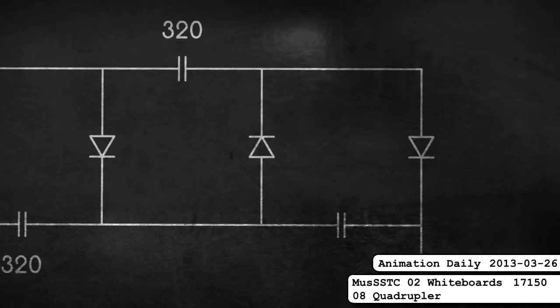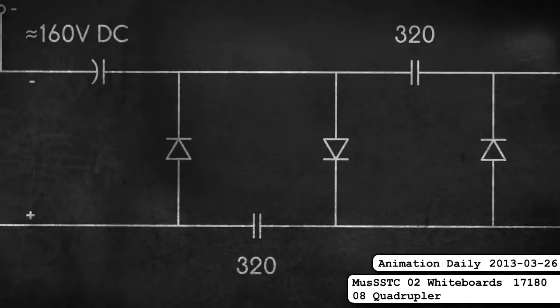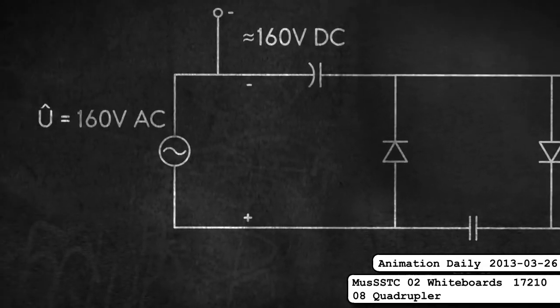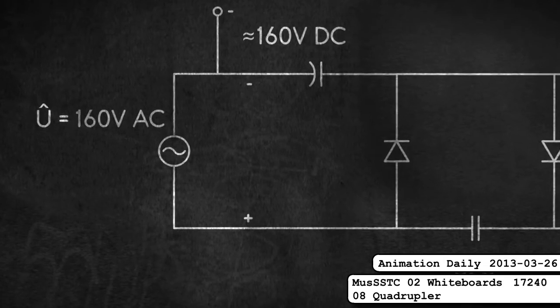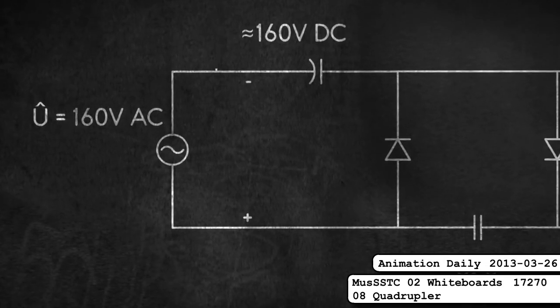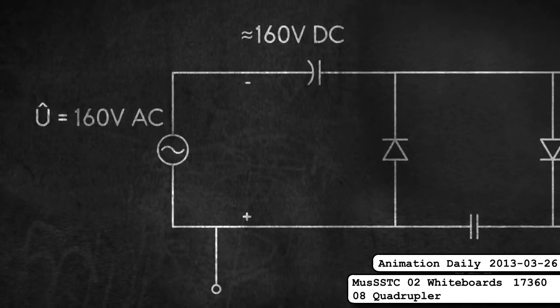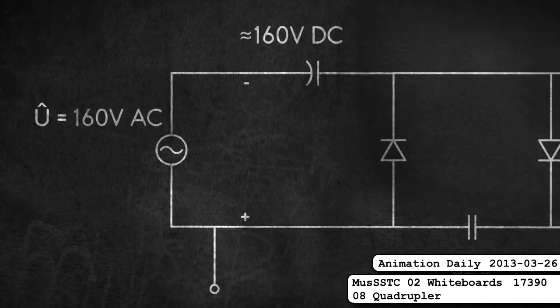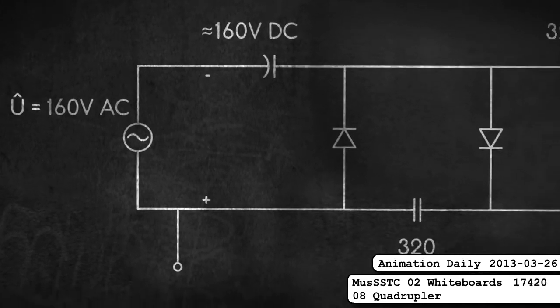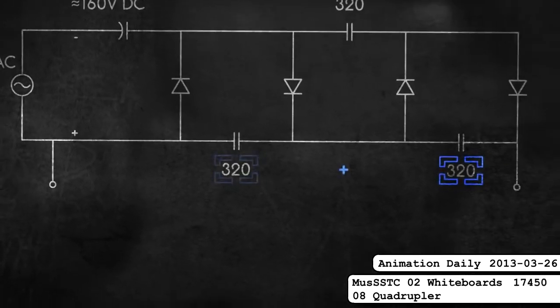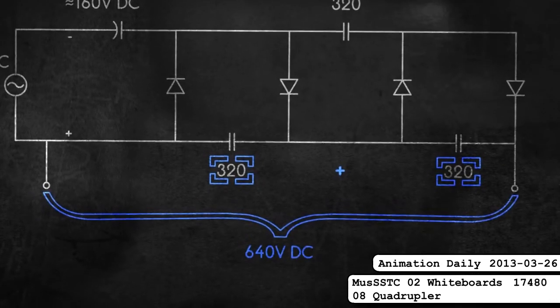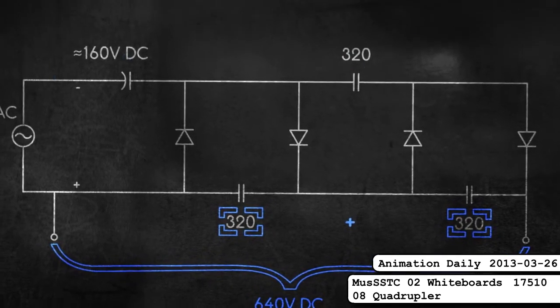By rights, I should have posted this yesterday because I finished it the day before, but I was busy doing other things. Finally done with the circuit diagram portion of the musical Tesla coil video number two, covering voltage multipliers.